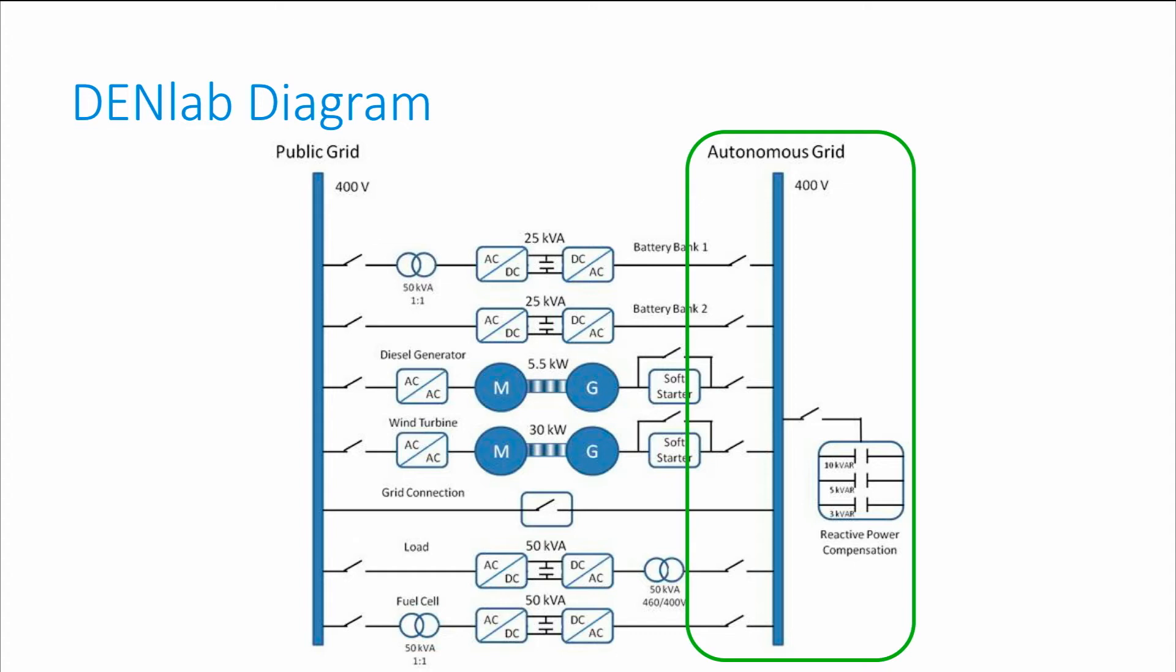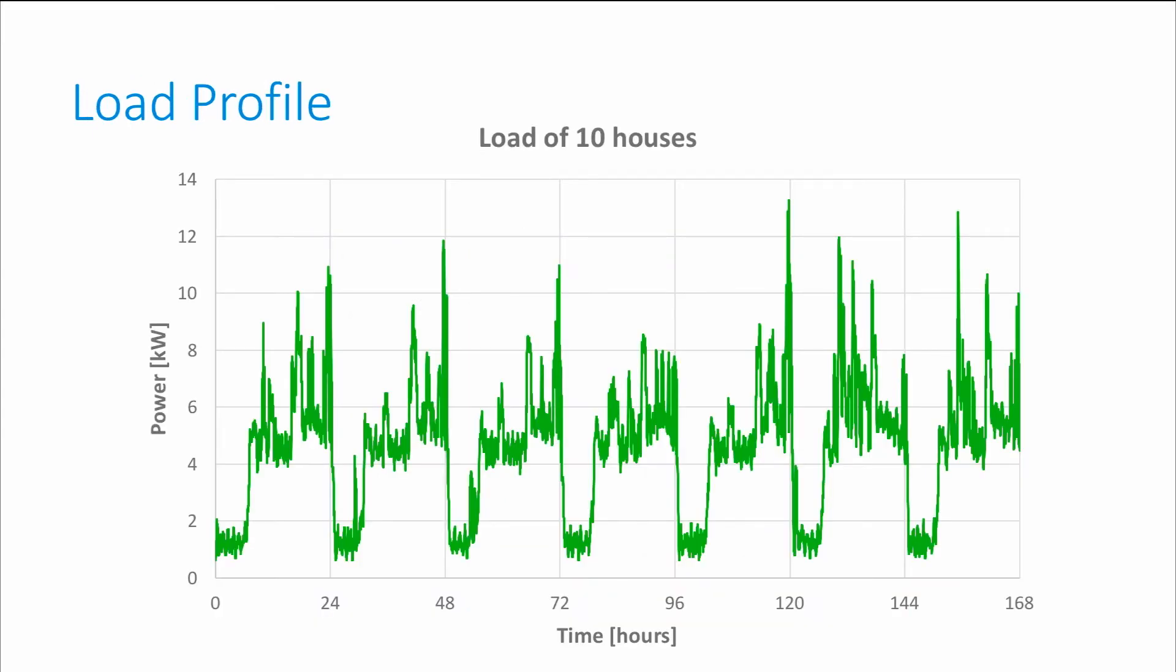DENLAB can work grid connected or off grid. This characteristic is important for a microgrid. In DENLAB, different load profiles are emulated. That means even though we don't have a washing machine or household devices in the lab, the active power that flows through the microgrid is the same as if they were connected.